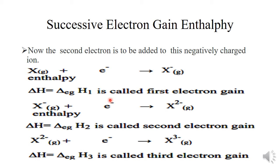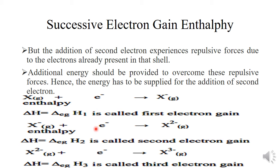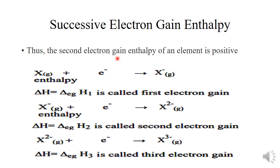If we want to add a second electron to this negatively charged ion, that is not an easy process, because both are having the same charge and same charges always repel each other. This second electron experiences repulsive forces because of the electrons already present in the outermost shell. To overcome these repulsive forces, we have to supply some additional energy. Hence, the second electron gain enthalpy of an element is positive in magnitude.